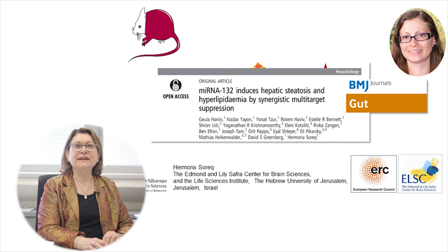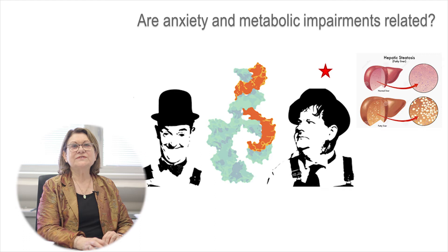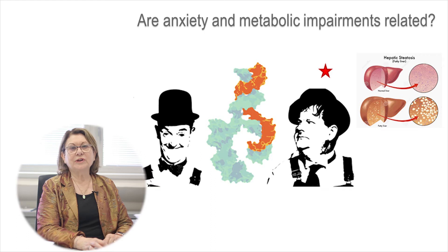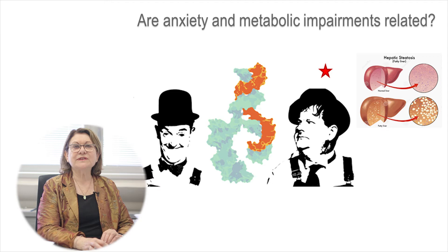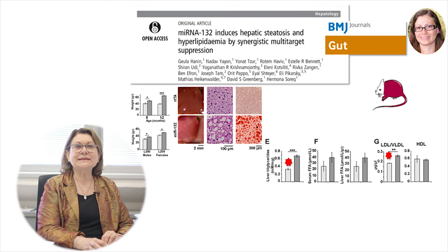If so, we should see fat accumulation in the liver. What Geula Hanin in the lab did was to create engineered mice with overexpression of the stress-induced microRNA-132 in all body tissues except the brain, because if we included the brain the mice never got born. Too much stress is not good for brain development.